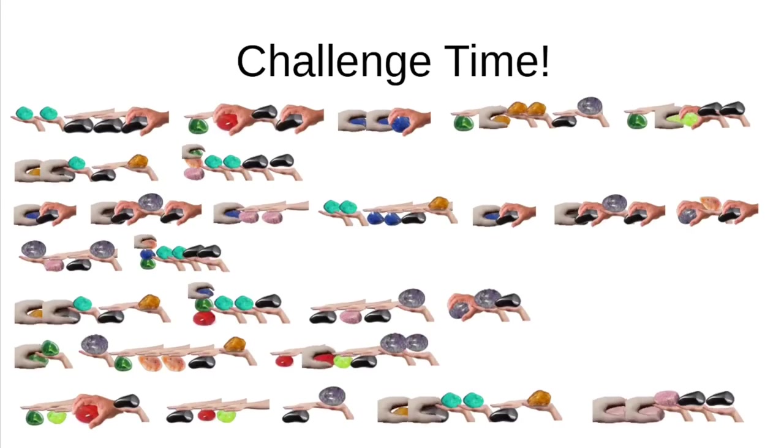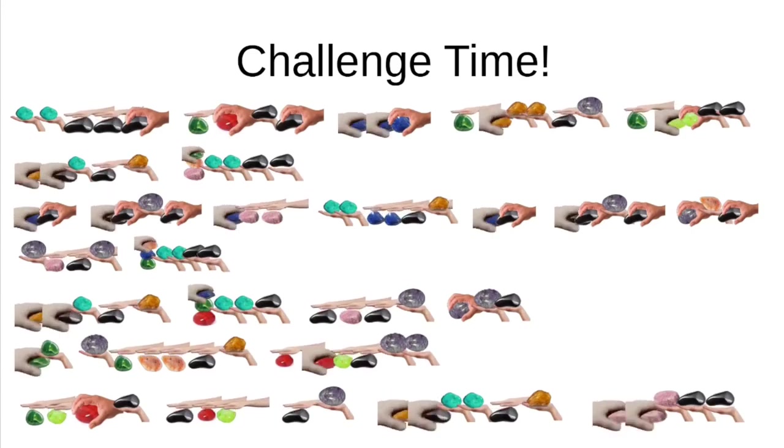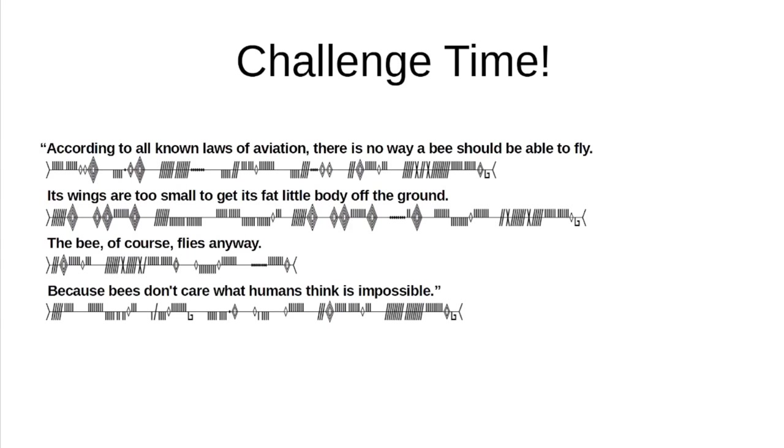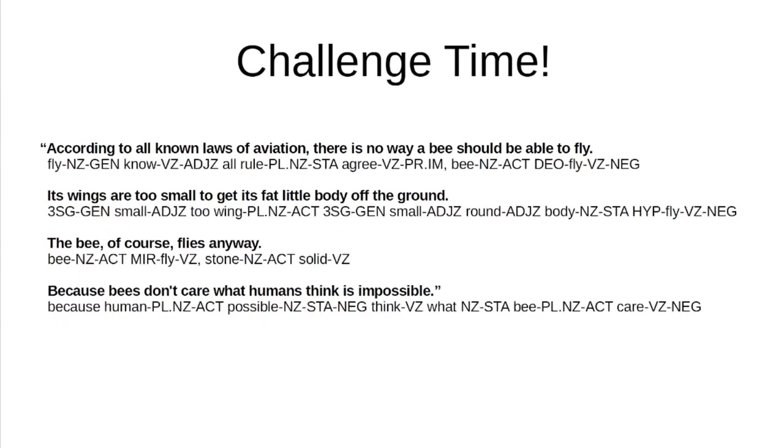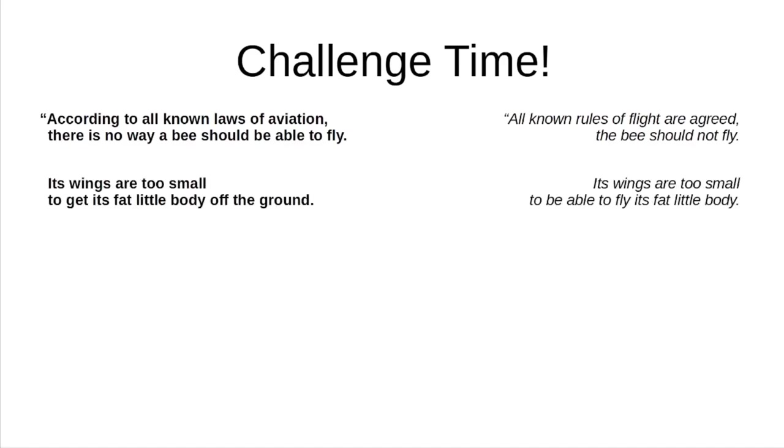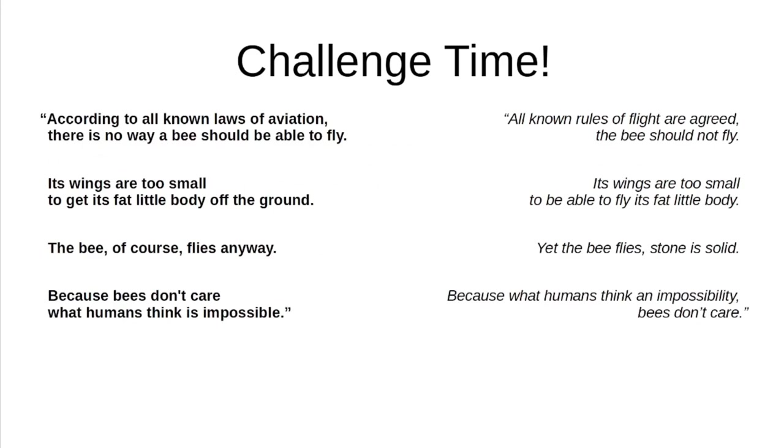And here is the complete pronunciation in rock fighting. And next, written Roam. I'll also show the linguistic gloss. And, a fairly literal translation back into English, to help show the structure of the language. Unknown rules of flight are agreed. The bee should not fly. Its wings are too small to be able to fly its fat little body. Yet the bee flies, stone is solid. Because what humans think an impossibility, bees don't care.